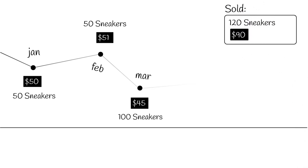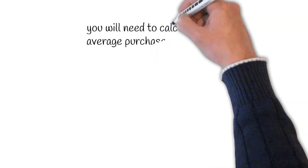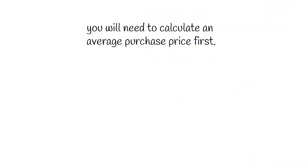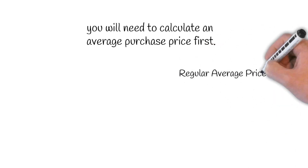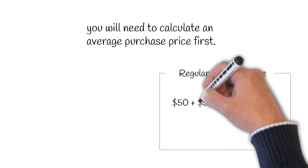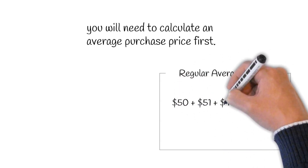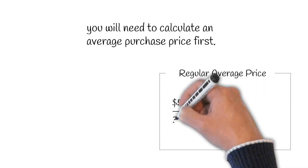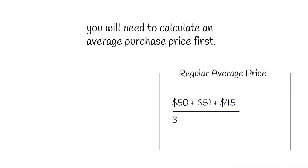Unlike FIFO or LIFO, before you apply the weighted average method to derive your inventory asset value, you will need to calculate an average purchase price first. Now, if you go only by the prices, you will derive what is called a regular average price, and the regular average price of the sneakers is equal to the total sum of $50 plus $51 plus $45, divided by 3 — or in other words, $146 divided by 3, which is equal to $48.60.